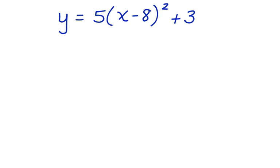Here's another one. Notice that this equation is already in vertex form. Let's identify h and k, because those are the coordinates of the vertex. The h value is 8, the k value is a positive 3. So the vertex of this parabola is at 8, 3.